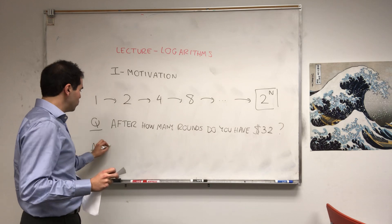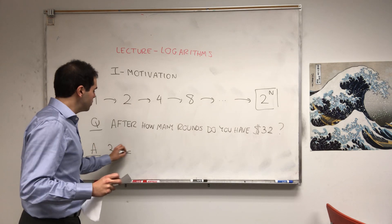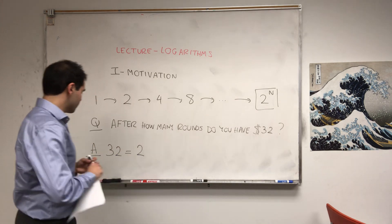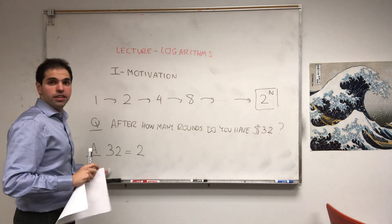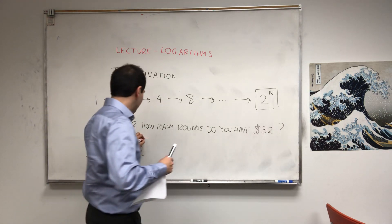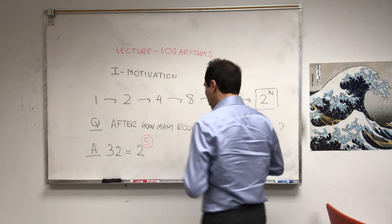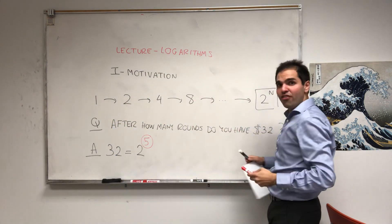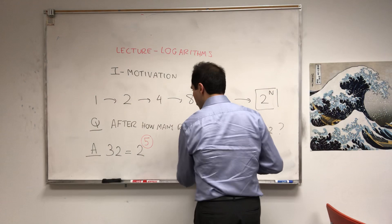So, the answer is, well, thirty-two, it's two to the what? Well, it's two to the five. So, in other words, it just takes five rounds to get thirty-two dollars.